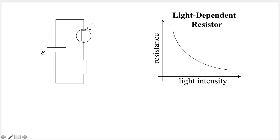So think about it, when it's really dark, is there a high resistance or a low resistance? When it's dark, intensity is down here, so resistance is high.